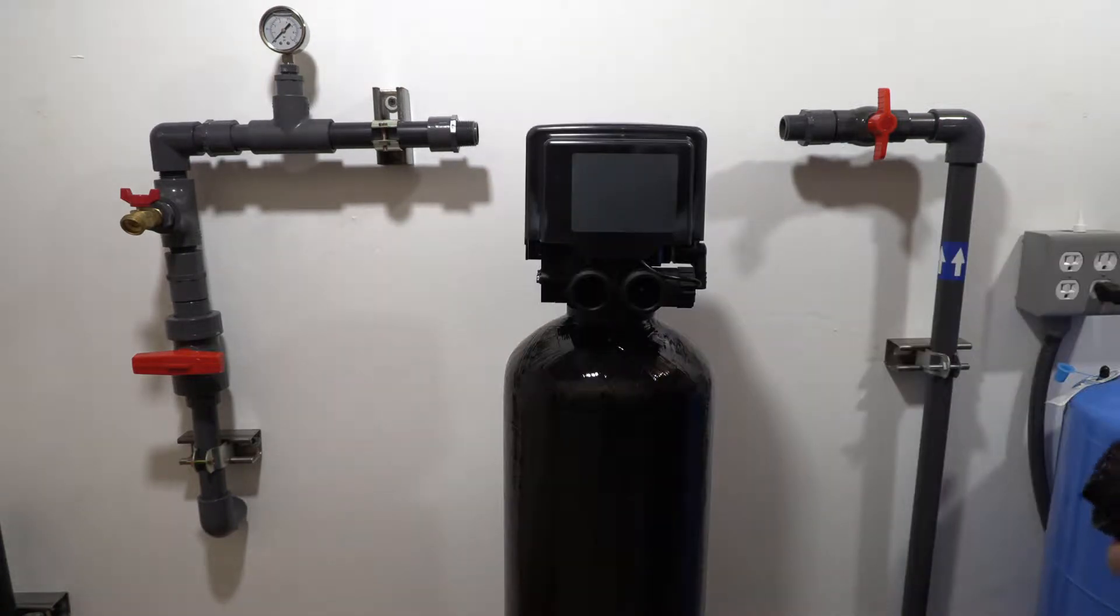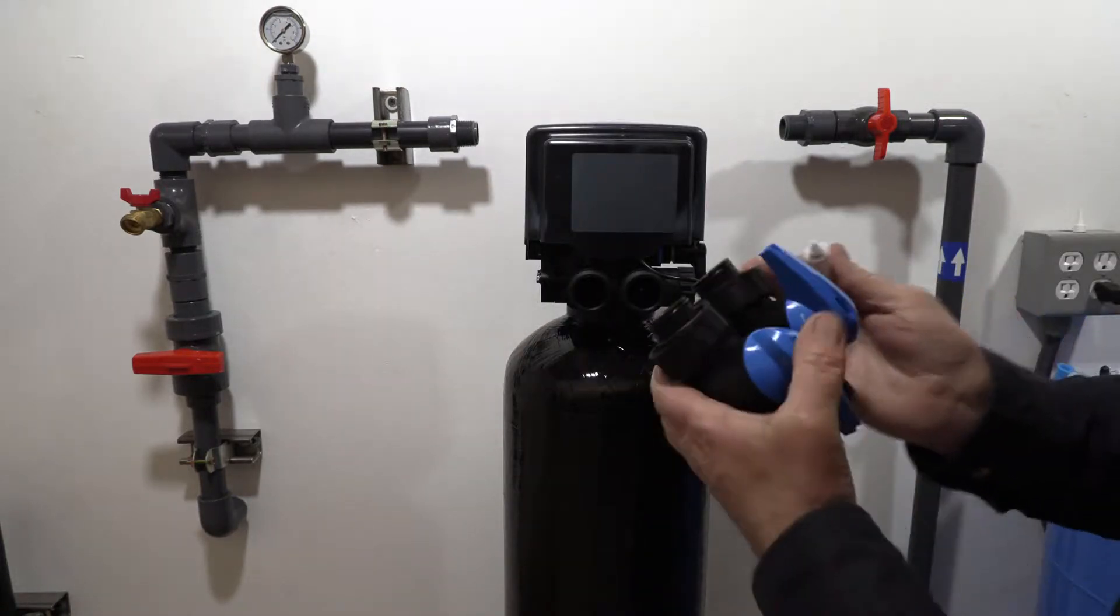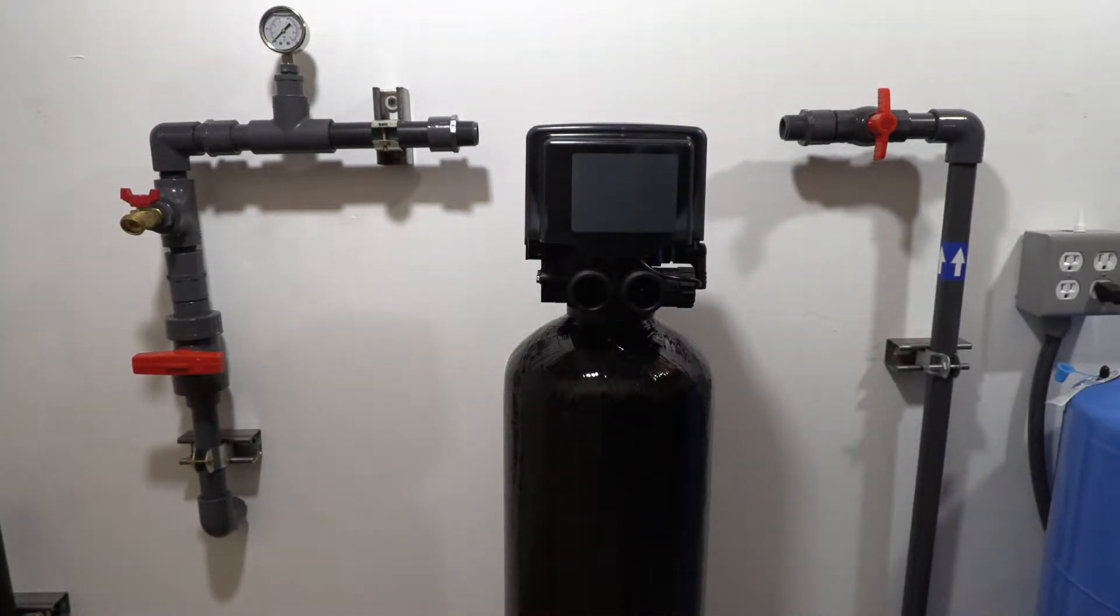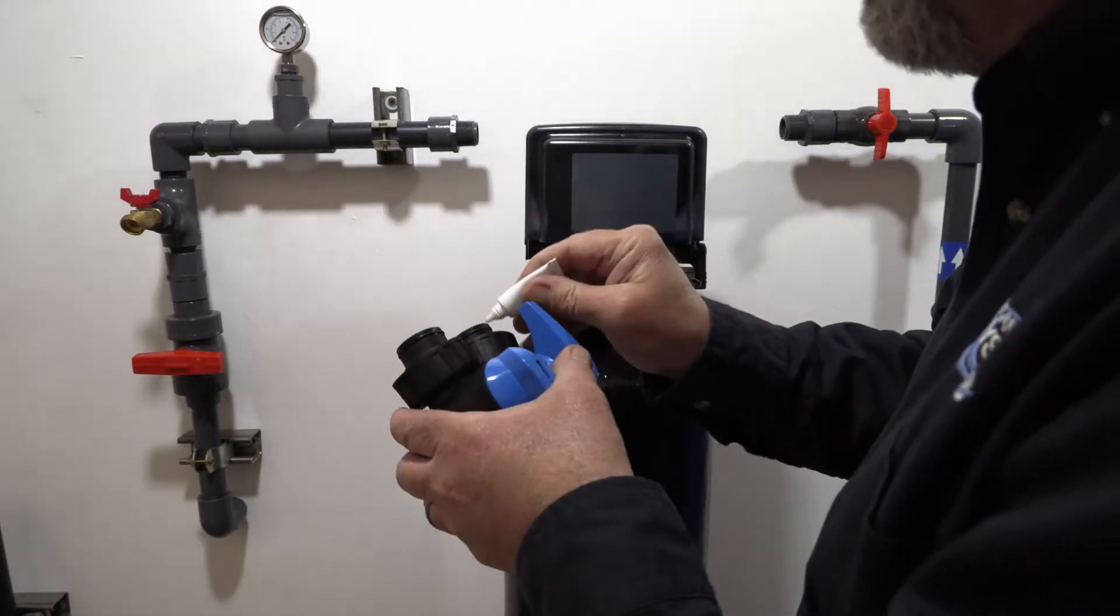Now we're going to install our bypass valve. Again, there are two o-rings on the inlet and outlet here. Make sure you put some lube on those as well.